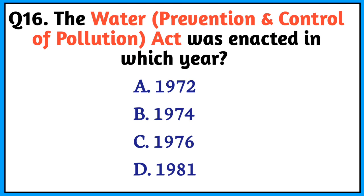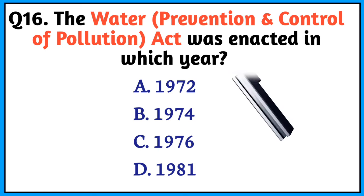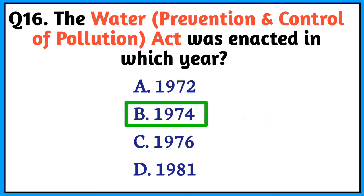Question number 16. The Water Prevention and Control of Pollution Act was enacted in which year? The right answer is option B. 1974.